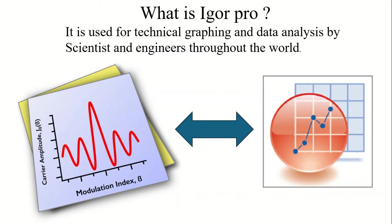Hello friends, welcome to my YouTube channel. Today we will learn about a new software which is Igor Pro. It has been developed by WaveMetrics and is used for technical graphing and data analysis by scientists and engineers throughout the world. Igor is known for its powerful graphing capabilities, which allow users to create publication-quality plots and presentations. It can be used as a substitute to Origin; I have found Igor to be more capable than Origin.